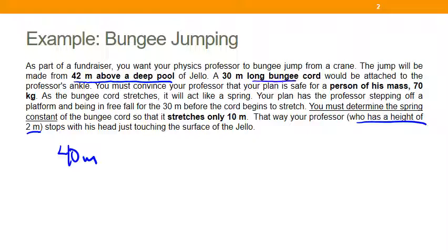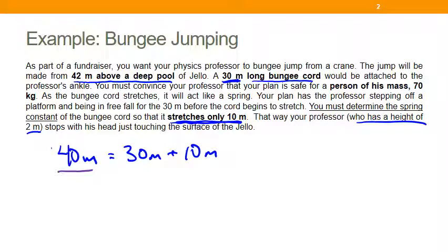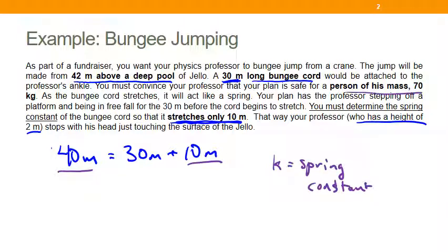You have a bungee cord that is 30 meters long, so the professor will fall 30 meters before the bungee begins to stretch. Then you want it to stretch only 10 meters, so that the 30 meters of fall plus the 10 meters of bungee stretching gives you the 40 meters to work with. You need a bungee cord that will stop your professor within that 10 meters, and your job is to figure out the spring constant, given that your professor has a mass of about 70 kilograms.